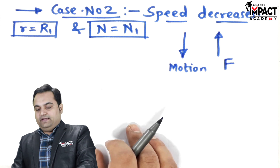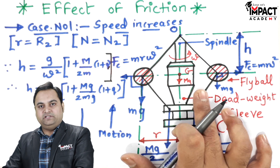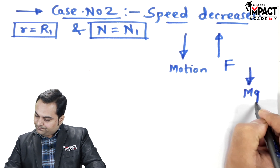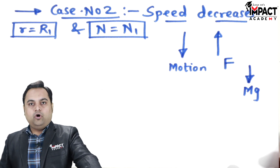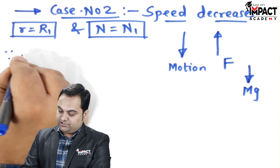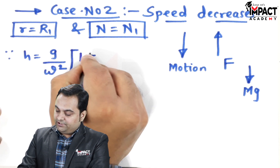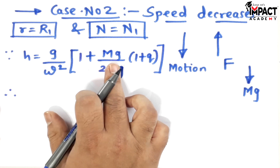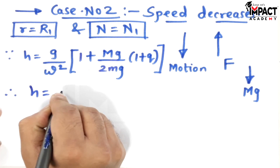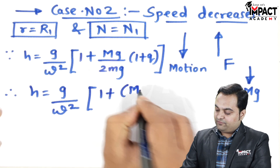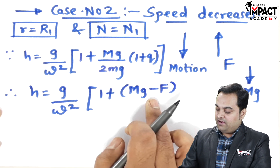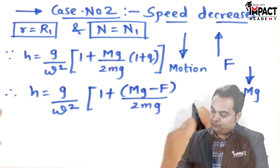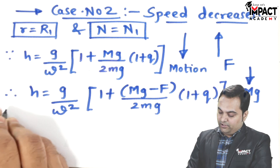When the sleeve moves downward, friction F acts in the upward direction — opposite to motion. The friction force is now upward, opposing the dead weight which acts downward. Therefore, in the formula for the height of the governor, h = (g/ω²) × (1 + Mg/(2mg)) × (1 + Q), friction must be subtracted: Mg − F, because friction opposes the weight.